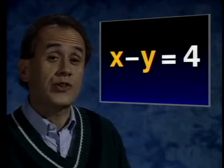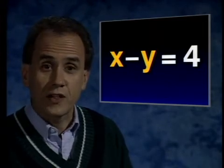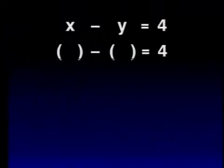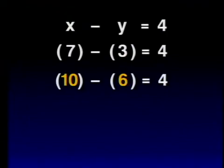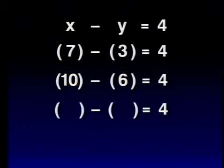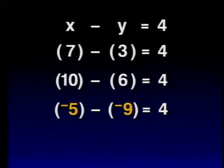Can you tell me what the solution is? That's right — there are many solutions. Let's find some. If X is 7, what would Y have to be to make this a true statement? Yes, 3. Both of these numbers make up one solution. What if X is 10? Then Y will be 6, so another solution is X equals 10, Y equals 6. What about negative 5 for X? Then Y would have to be negative 9. That means X equals negative 5, Y equals negative 9 is yet another solution.